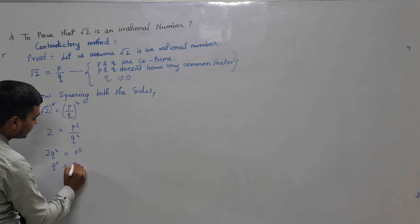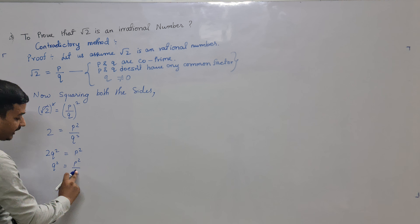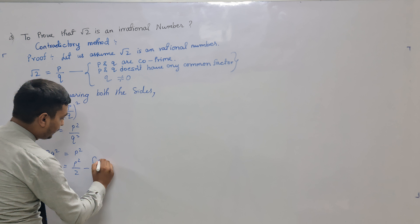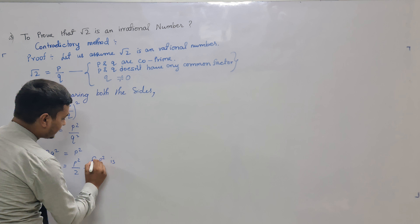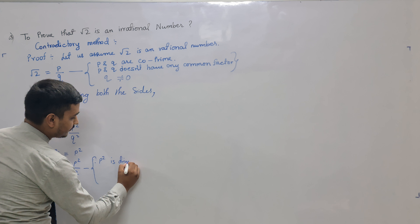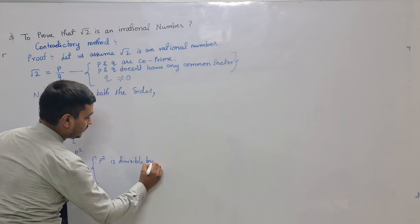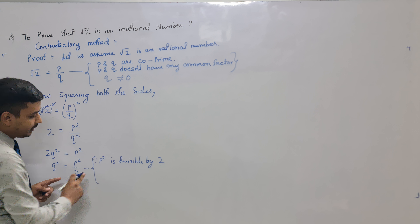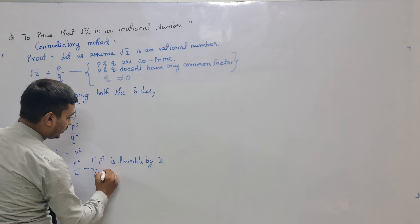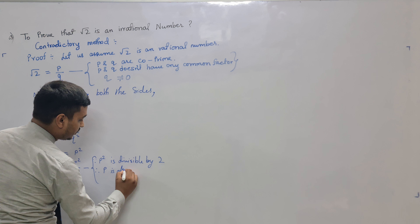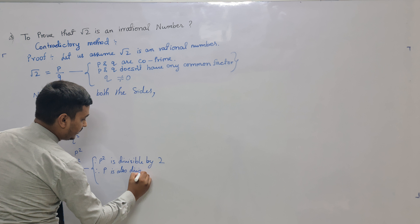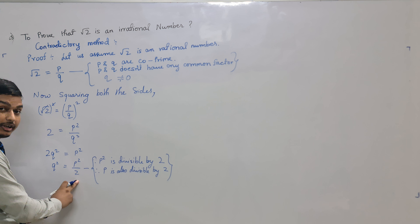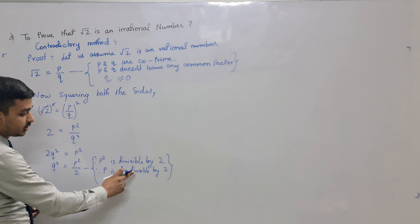We can also write Q square is equal to P square by 2. Now, since P square is divisible by 2, therefore P is also divisible by 2. Whenever P square is divisible by 2, we can conclude that P itself is also divisible by 2.